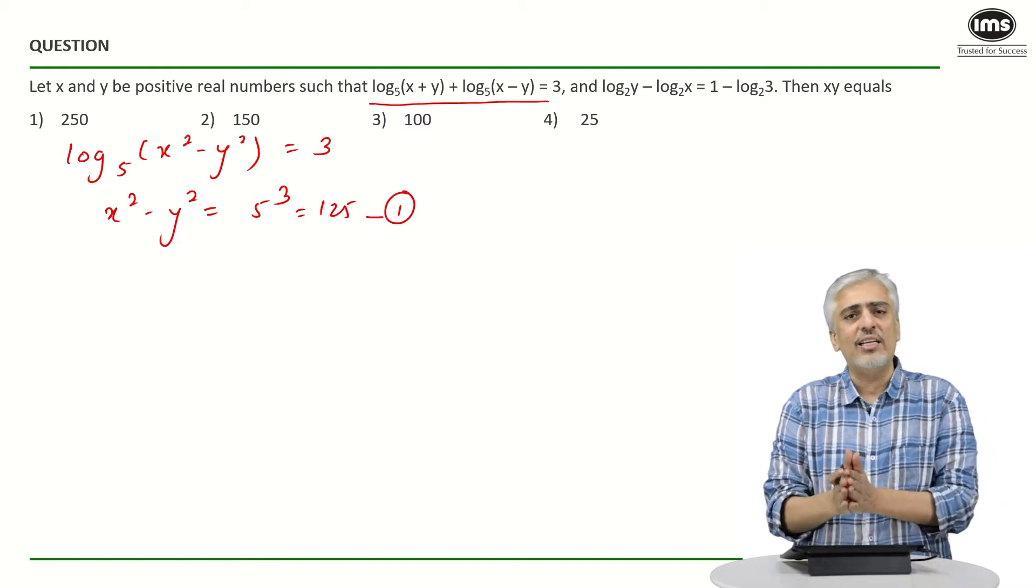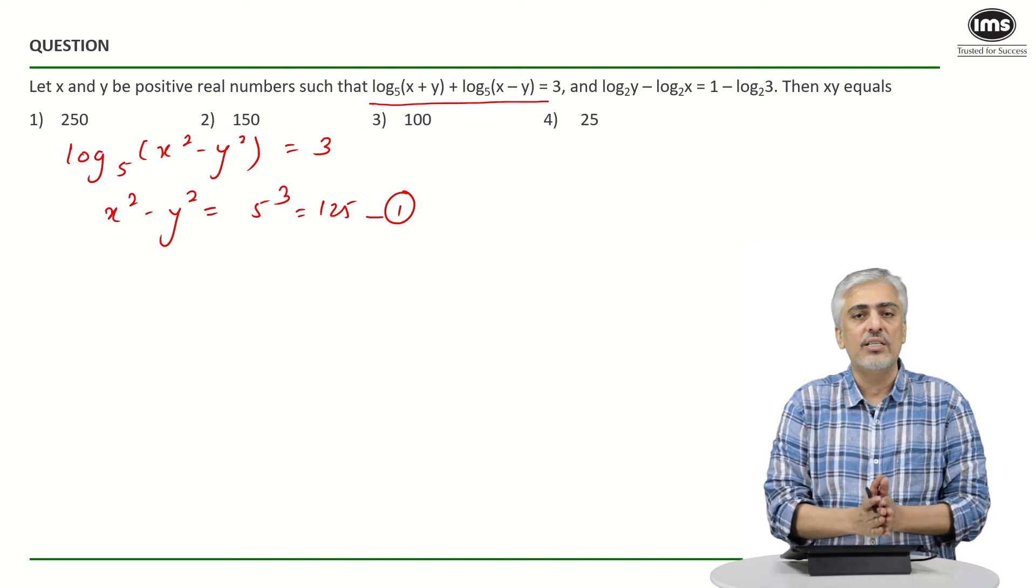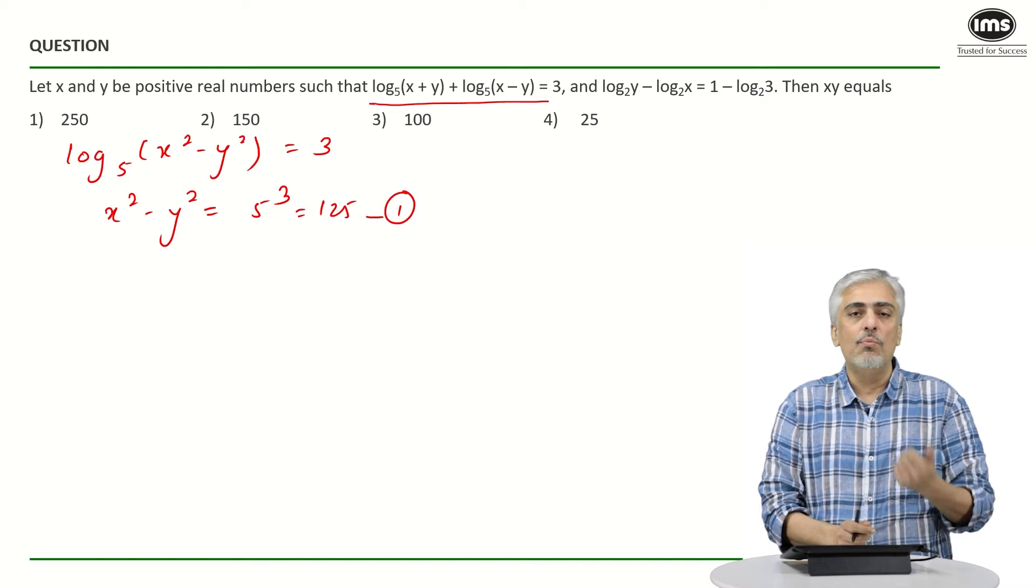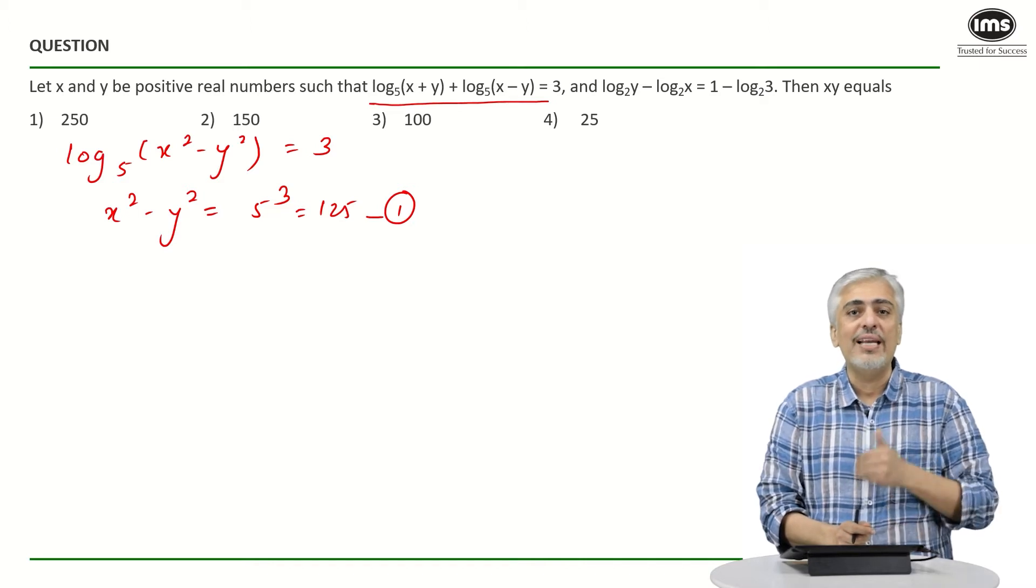Now after that, converting logs to indices. How do you convert logs to indices? x² minus y² will be 5 raised to 3 which is 125. So that becomes like my first equation. So you've got a regular equation from logs. We have converted everything to a regular equation. So that's what I tell students, once you understand logs and how can logs be converted to indices, most of the questions of logs become like indices.